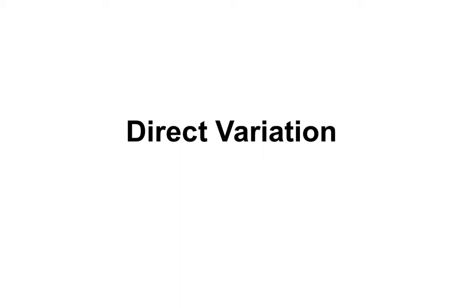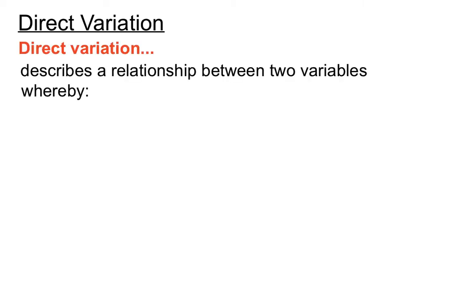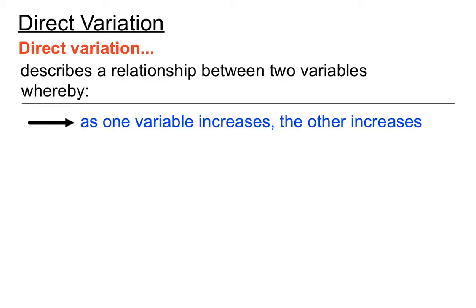Welcome to a direct variation video. Direct variation involves a relationship between two variables whereby as one variable or one item increases, the other increases.